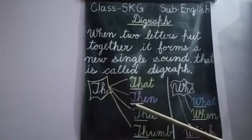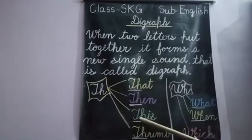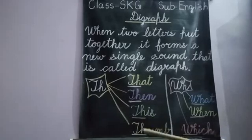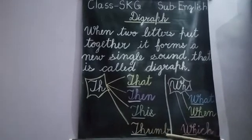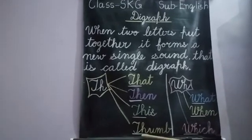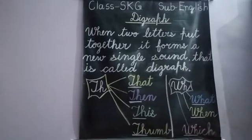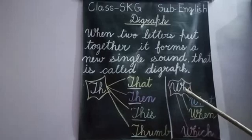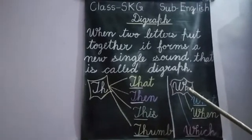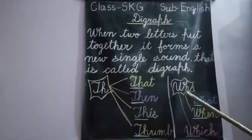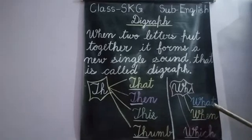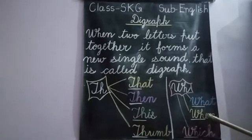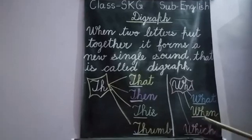T-H-I-S: 'this', T-H-U-M-B: 'thumb'. The digraph is TH. Next is WH, which will produce the wh sound. For example, W-H-A-T: 'what', W-H-E-N: 'when'. The digraph is WH.